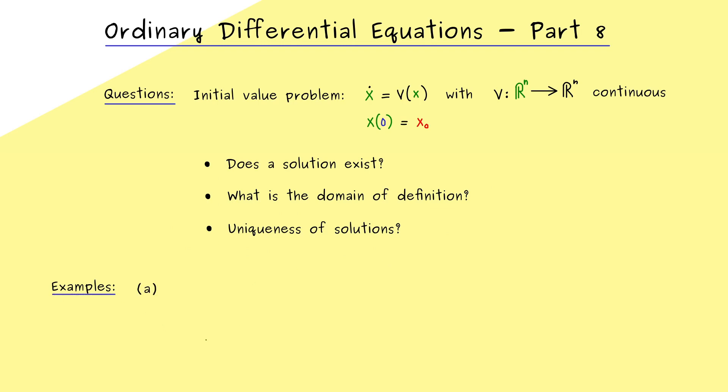So let's start with an initial value problem we have already solved in former videos. Namely, x dot is equal to x squared, and as the initial value, let's choose x(0) = 1. Now you should know how to solve this initial value problem, otherwise you should watch part 5 again. So we conclude that the solution exists.